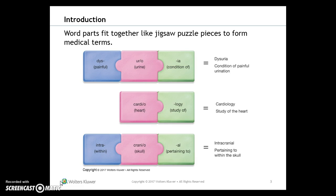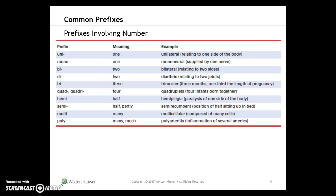The first term is dysuria: 'dys' is the prefix meaning painful, 'uro' is the combining form or root word meaning urine, and 'ia' is the suffix meaning the condition of — so dysuria is the condition of painful urination. Another example is intracranial, pertaining to within the skull.